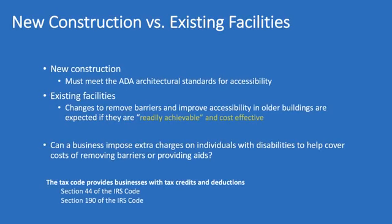In terms of application, what does the ADA look like for existing versus new construction? Because the law was passed in 1990, there are already existing facilities that don't meet the requirements. For those existing facilities, the law basically says organizations should do what they can to remove barriers and improve accessibility, and those changes have to be both cost effective and readily achievable. It's possible that even in 2019 we are experiencing facilities that aren't completely accessible, because making those changes is not always readily achievable and cost effective for organizations. It does take time and has taken many places a long time to make these accommodations.